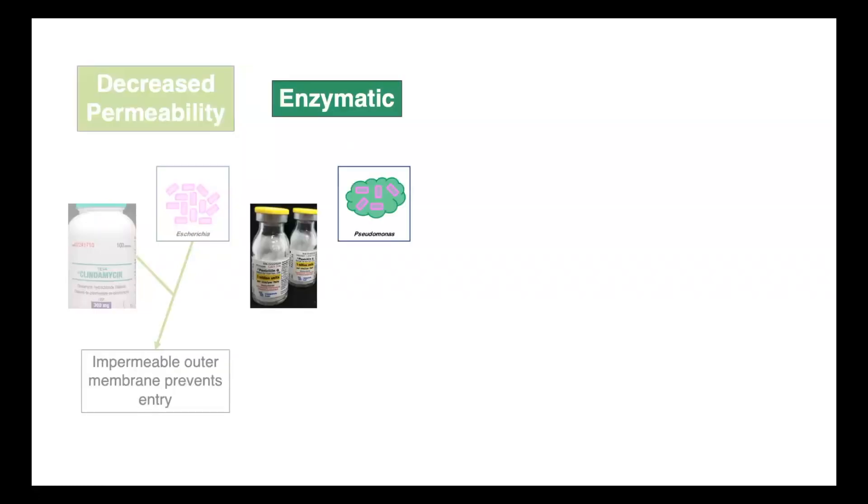have an outer membrane, which is highly impermeable and makes it difficult for drugs like clindamycin and other macrolides to make their way into the cell. As a result, this impermeable outer membrane makes these organisms intrinsically resistant to clindamycin.